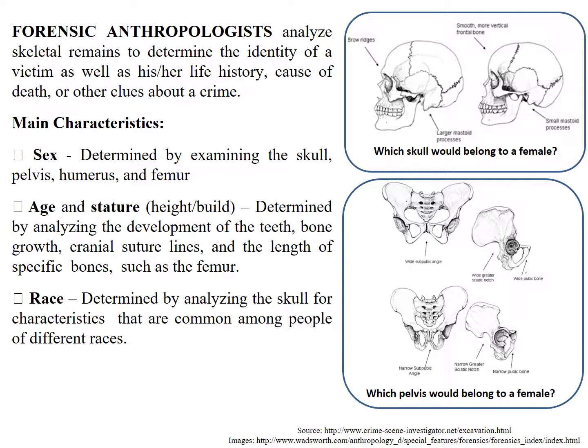Let's look at these images and determine which skull and which pelvis would belong to a female. At the top, we have two skulls: one has a brow ridge and a large mastoid process, and one has a smoother vertical frontal bone and a small mastoid process. For the pelvis, we have one with a wide subpubic angle and one with a narrow subpubic angle — think about which pelvis belongs to a female.